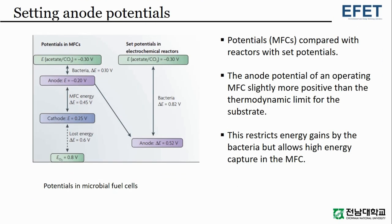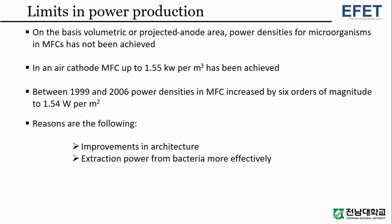In this figure, we can see potentials compared with reactors with set potentials. The anode potential of an operating microbial fuel cell is slightly more positive than the thermodynamic limit for the substrate. This restricts energy gains by the bacteria but allows high energy capture, since power production is the main objective of a microbial fuel cell.